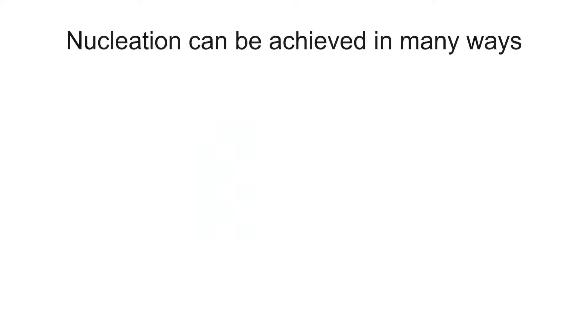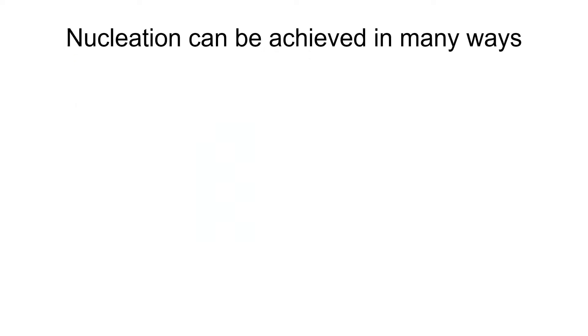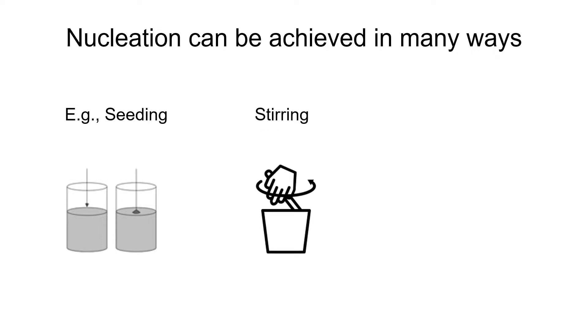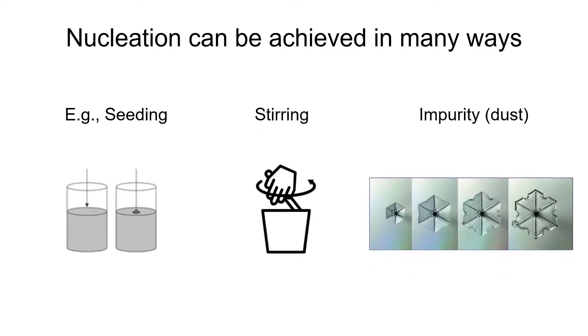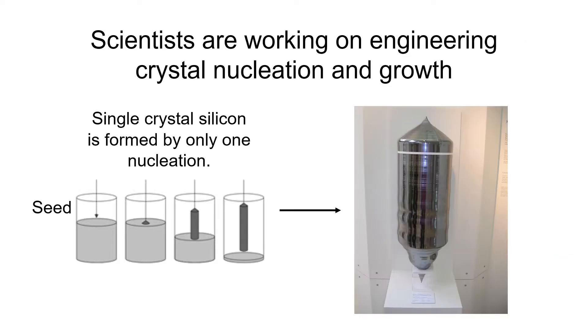In the real world, nucleation can be achieved in many ways. For example, you can use a tiny crystal as a seed to grow crystal from melt or solution, or stirring, or add impurity. Like snowflake, the nucleation is actually dust in the air. This is the basic science about how crystals are formed through nucleation and growth.